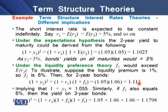Similarly, f3 = 6%. The yield on a 3-year bond can be determined the same way using (1 + r1) × (1 + f2) × (1 + f3) = 1.05 × 1.06 × 1.06 = 1.1798. So that is the yield in year 3.